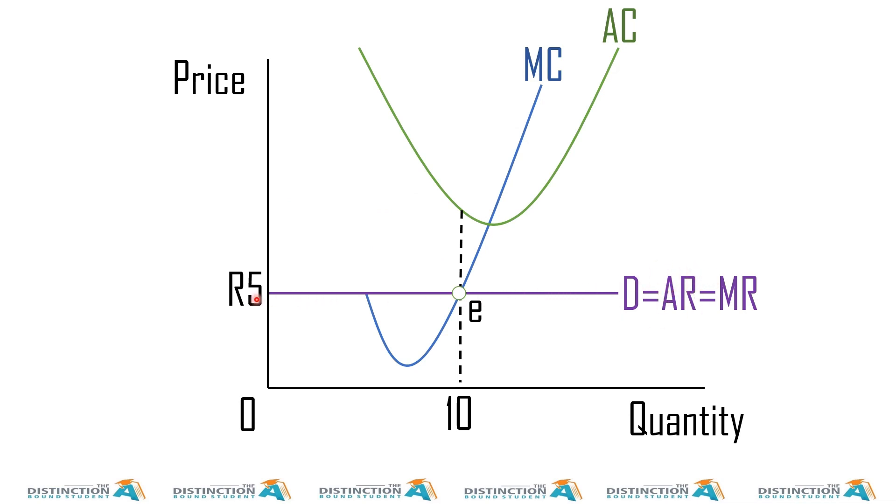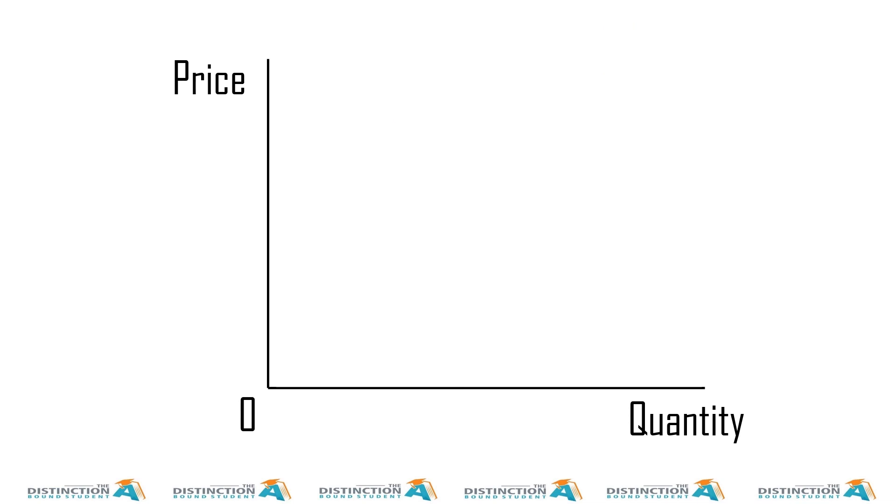Because what they are getting is here, average revenue. So it's common sense here. Yes, it's 10. So this firm is making an economic loss of 5 rand per unit. And then if we say 5 times 10, so this firm is making 50 rand loss, or 50 rand economic loss.